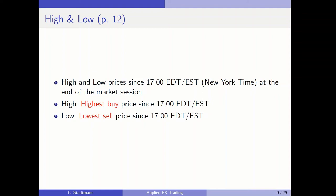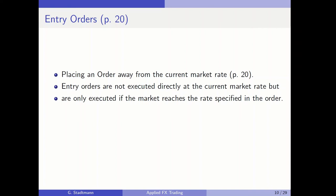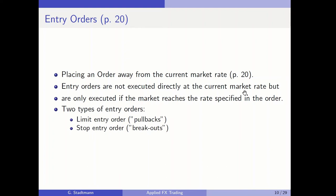Entry orders are very important. When we place an entry order, we place an order away from the current market rate. Entry orders are not executed directly at the current market rate but are only executed if the market reaches the rate specified in the order. There are two types: limit entry orders, used to implement a pullback strategy, and stop entry orders, used to implement a breakout strategy.